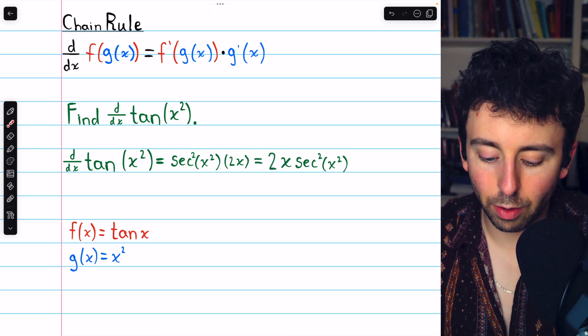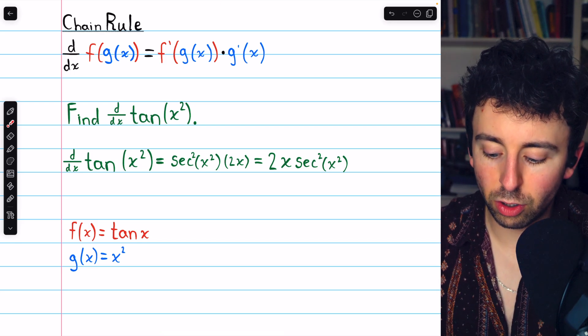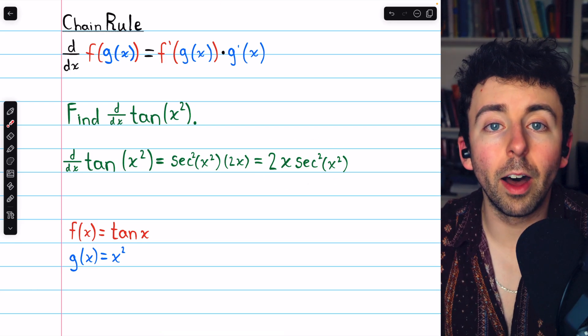Finally, let's just bring the 2x to the front. That's generally how we would prefer to write this. So the derivative is 2x times secant squared of x squared.